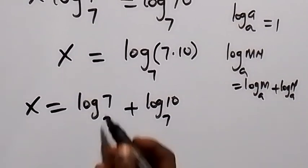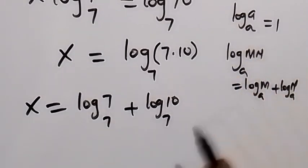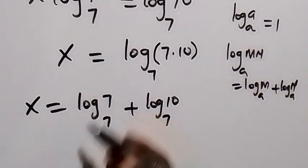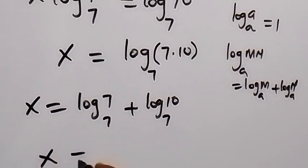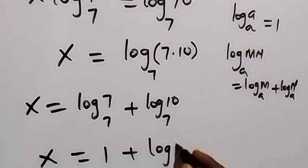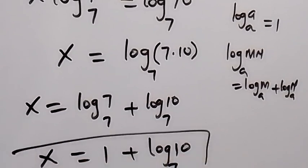And from here, log 7 base 7 from log a base a equals to 1, we have here to be 1. So we have x equals to 1 plus log 10 base 7. So we have the value of x here.